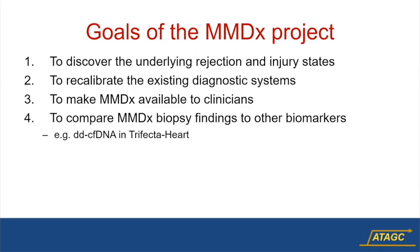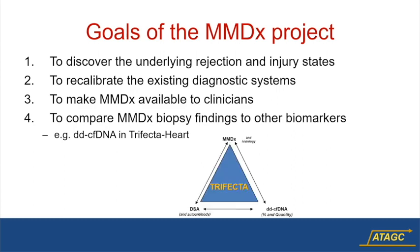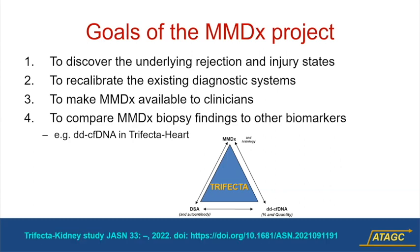Finally, we're comparing MMDX biopsy findings to other biomarkers like cell-free DNA — that's the basis of the trifecta studies. We'd like to include all organs — kidney, heart, lung and liver. The trifecta studies look at centrally measured donor-specific antibody by One Lambda, cell-free DNA measured by Natera, and the MMDX phenotype of the biopsy. The first report from the trifecta was just out in JASN.